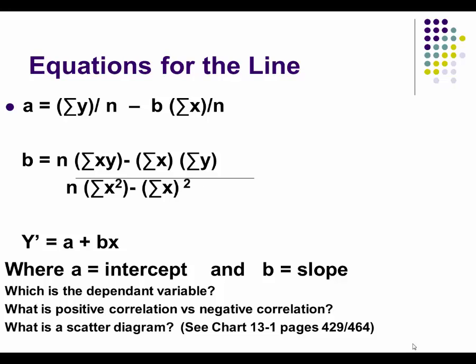You will recall that a cumbersome number of formulas were used to calculate and generate the linear regression equation. The linear regression equation is y' equals a plus b times x. a is the intercept, or the value of y' that we're attempting to forecast when x is 0. b is the slope of the line, or by how much y' changes for every one unit change in x. We call y the dependent variable; x is the independent variable.